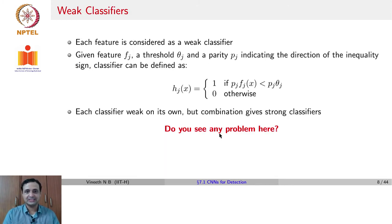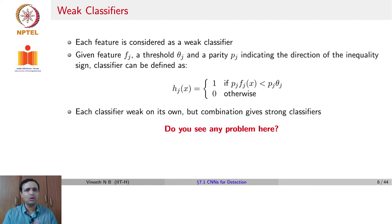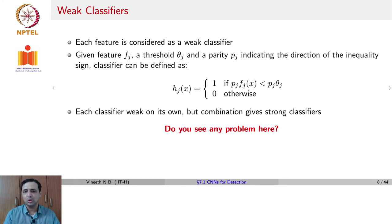Once you have the outputs of these Haar filters, the Viola-Jones algorithm treats each feature as a weak classifier. Given a feature fj (one of those Haar wavelets), a threshold θj, and a parity pj indicating the sign, the weak classifier is defined as: h_j(x) = 1 if p_j · f_j(x) < p_j · θ_j, and 0 otherwise. Using this, you get one classifier for every Haar feature.